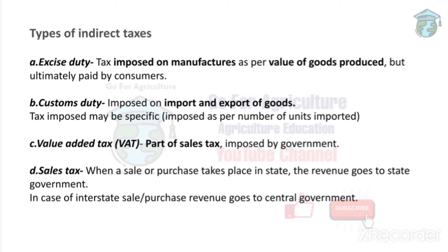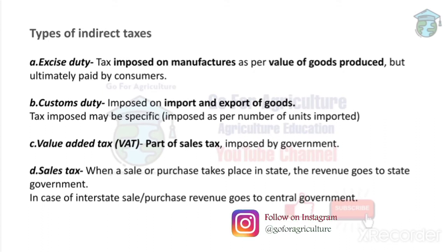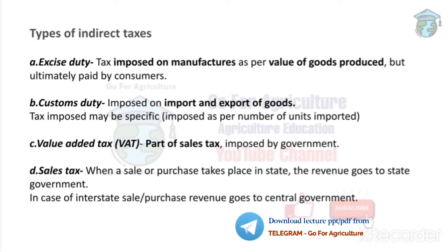When we sell or purchase any product, we pay the government in the form of GST or sales tax. If you buy a product within a state, that money goes to the state government. If you buy it interstate, the money goes to the central government. Either way, the money goes to the government as public revenue.